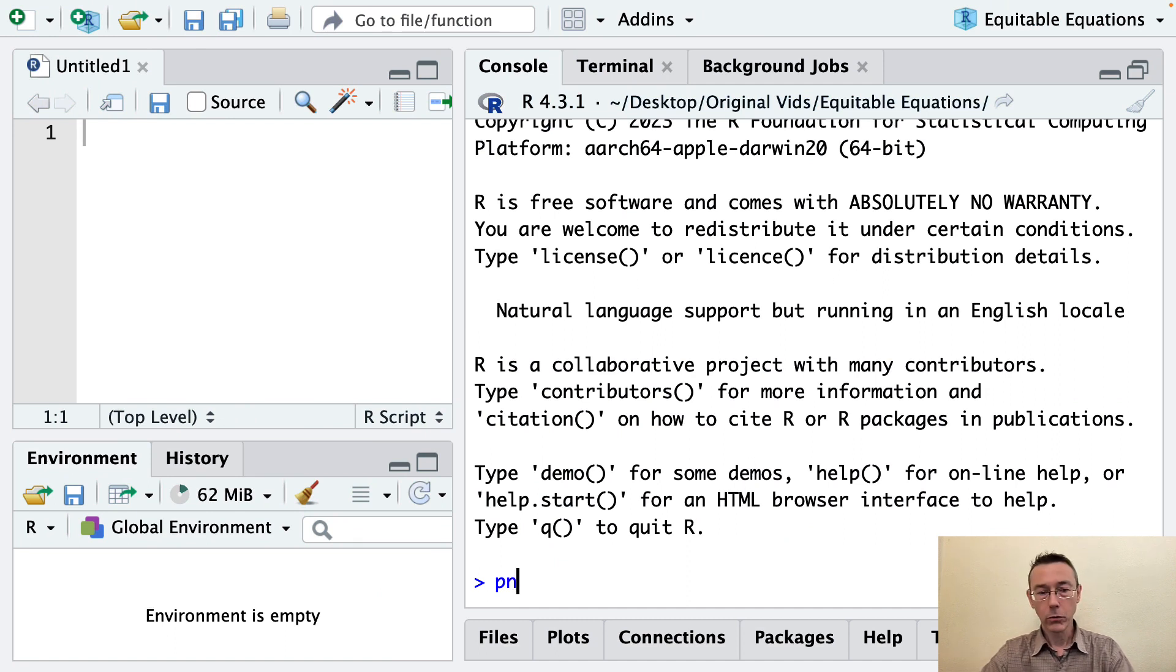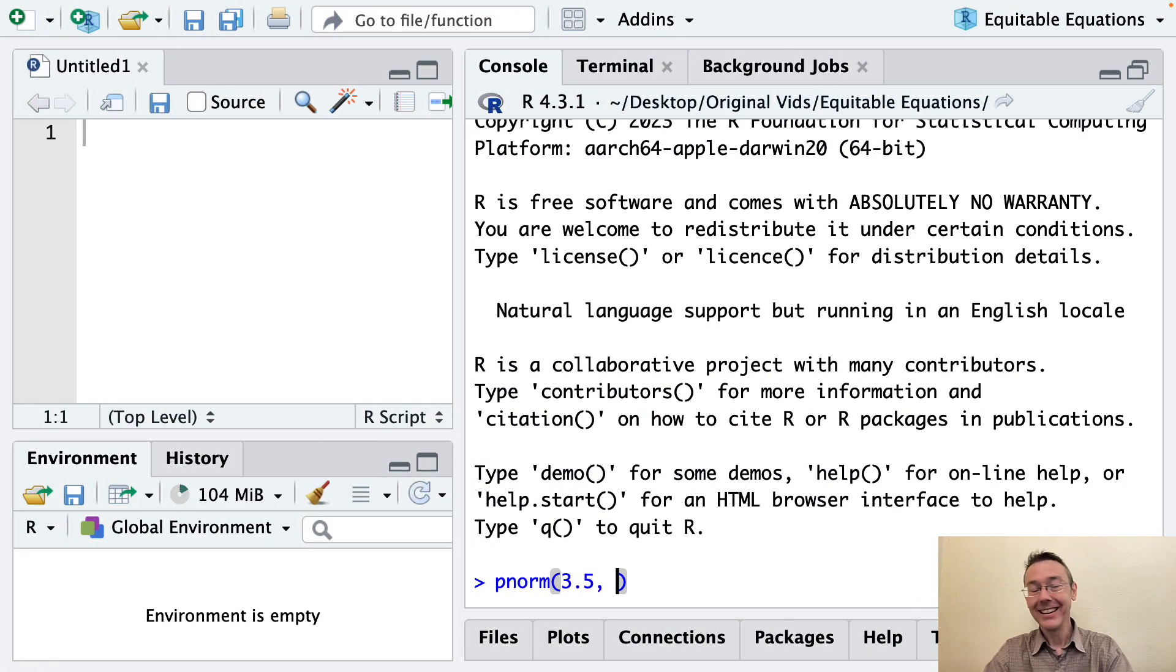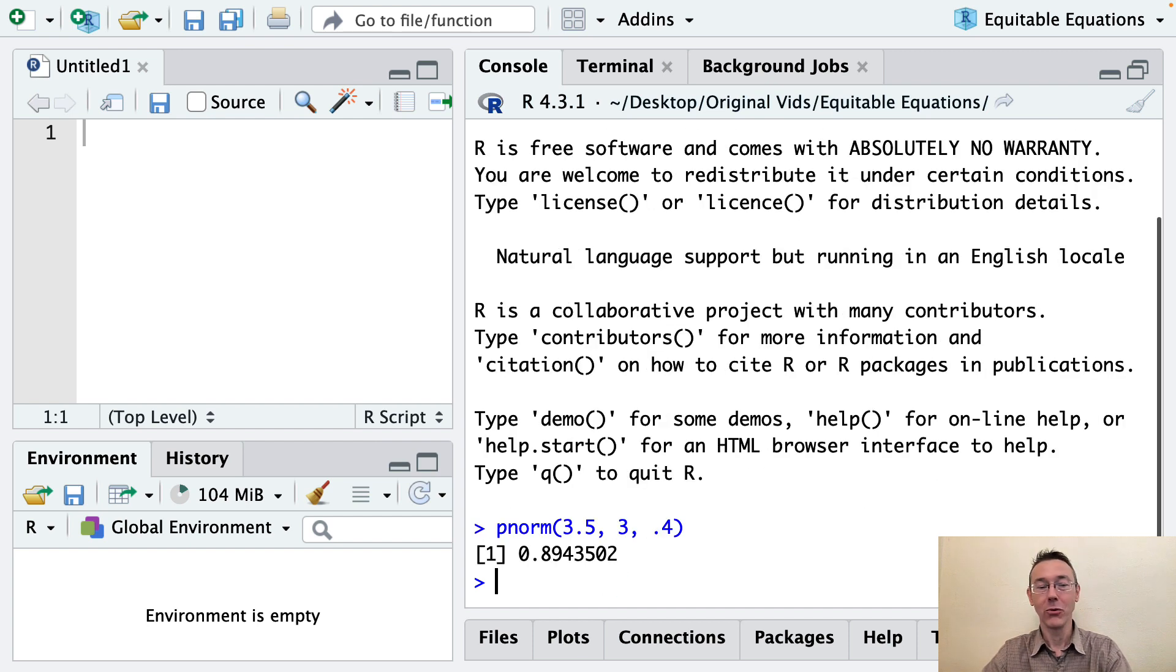Okay, so just to reiterate what I just did, I'm going to do pnorm of 3.5 in the normal distribution with mean 3 and standard deviation 0.4. And there's that 89.4 that we saw on the slide.